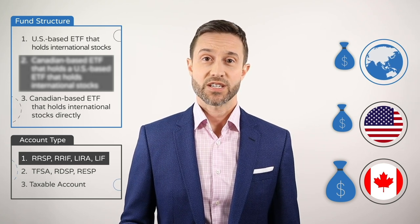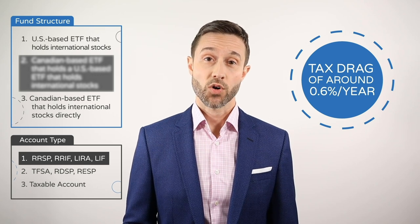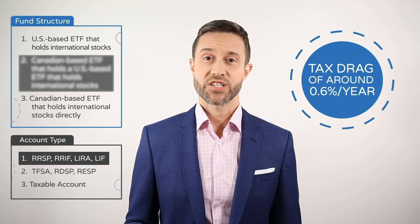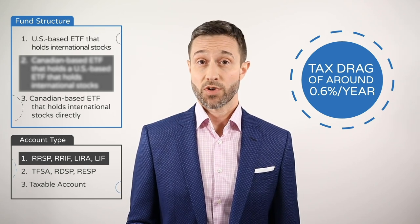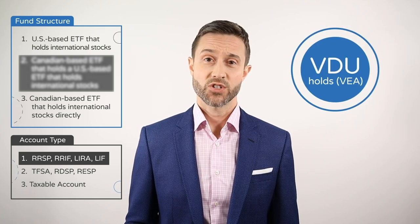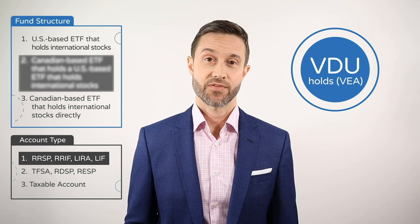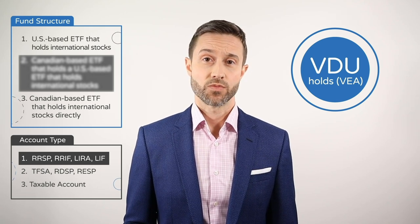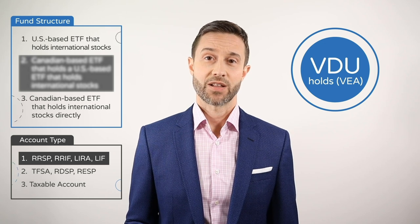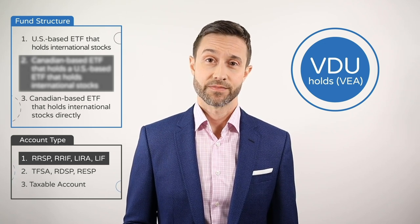The end result is a tax drag of around 0.6% per year. This fund structure can still be seen — although probably best avoided — in ETFs like the Vanguard FTSE Developed All Cap ex-US Index ETF with ticker symbol VDU, which holds the US-based Vanguard FTSE Developed Markets ETF with ticker symbol VEA.